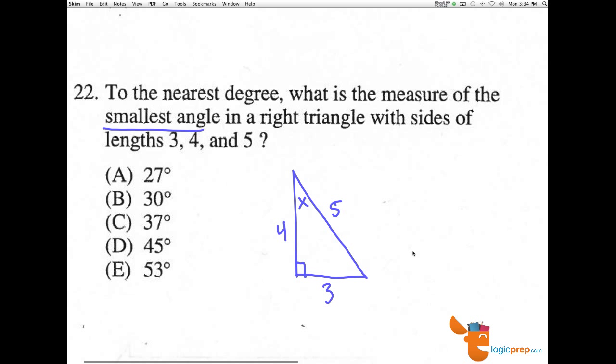Now we can use basic right triangle trig, SOHCAHTOA, and we can use any one of them because we know all the sides. So I'll just choose sine of x, and that's equal to opposite over hypotenuse, 3 over 5.